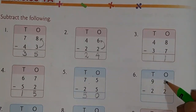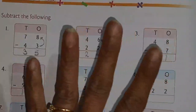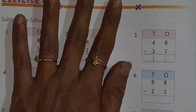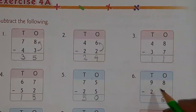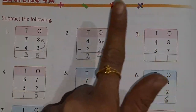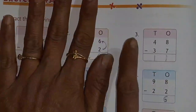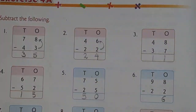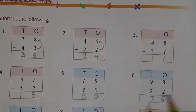Next: after 2 count till 8 — 3, 4, 5, 6, 7, and 8 — 6 fingers, so your answer is 6. Next one: 9 minus 2 — after 2 count 3, 4, 5, 6, 7, 8, and 9 — so 7 fingers. Your answer is 76.